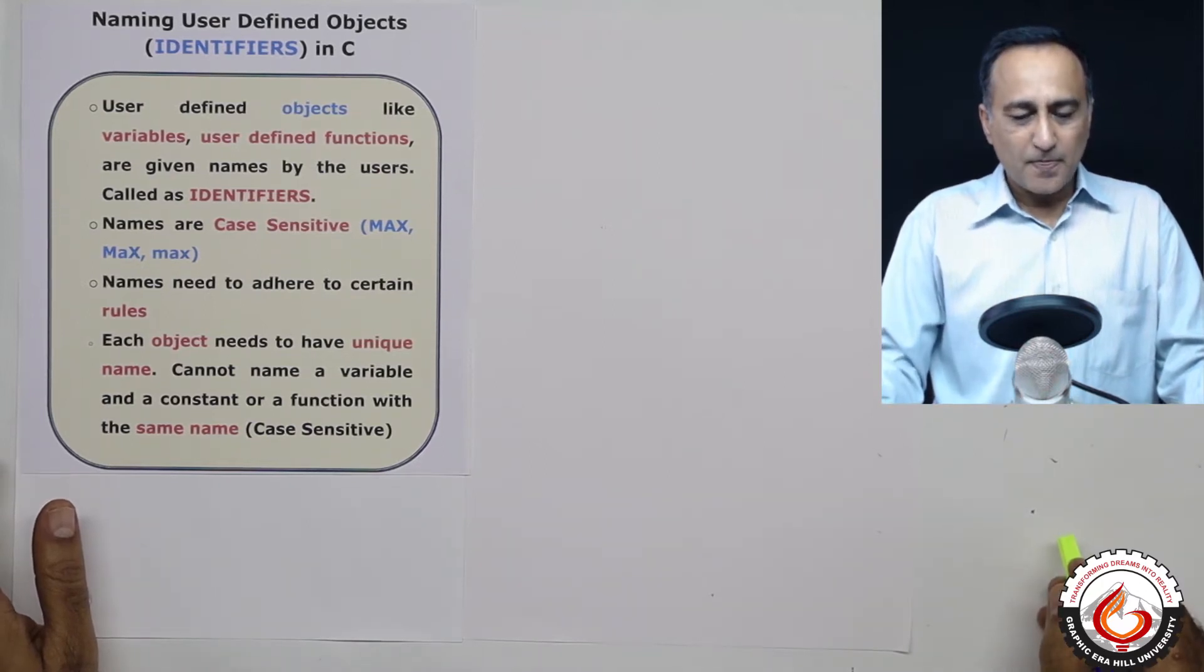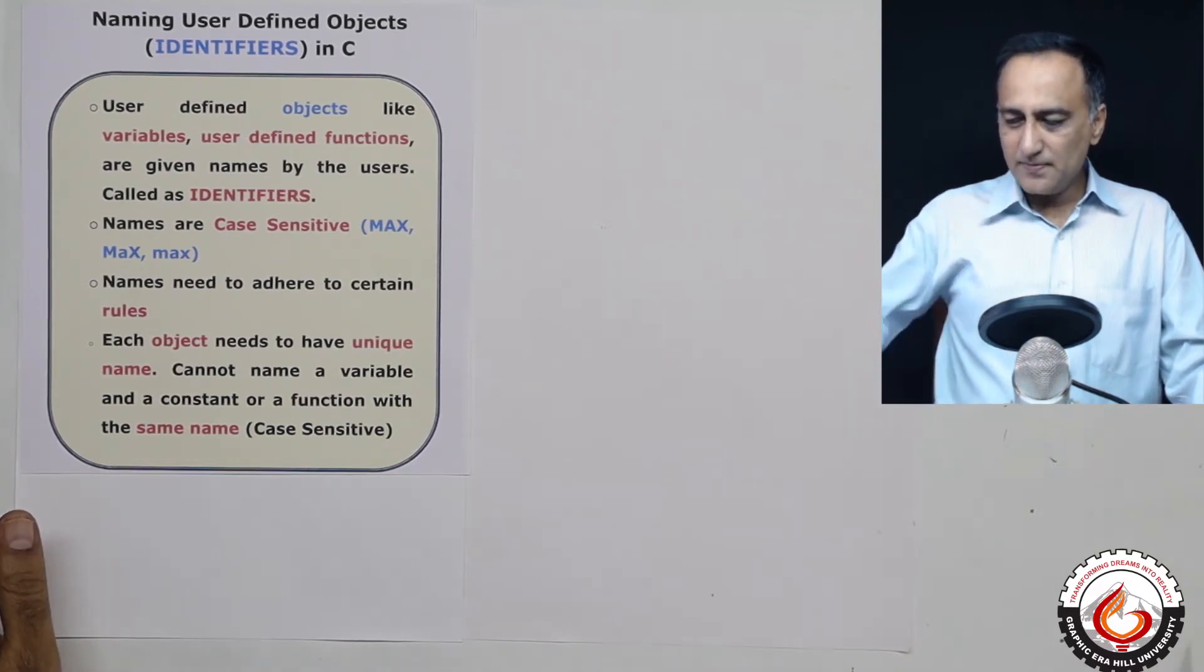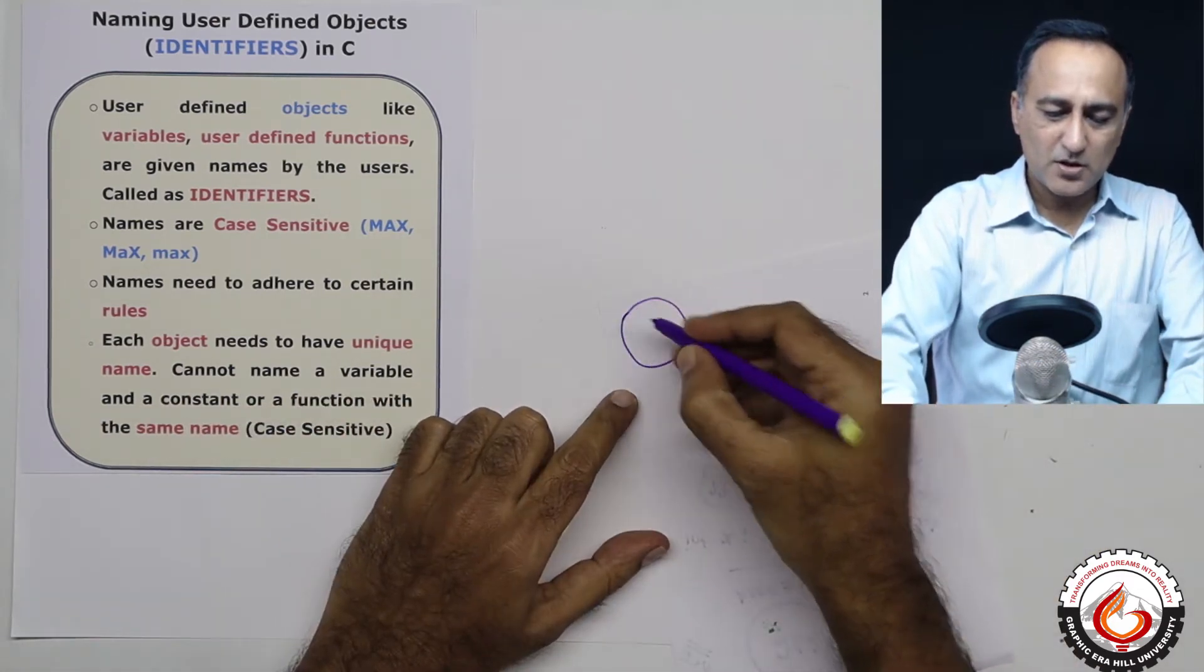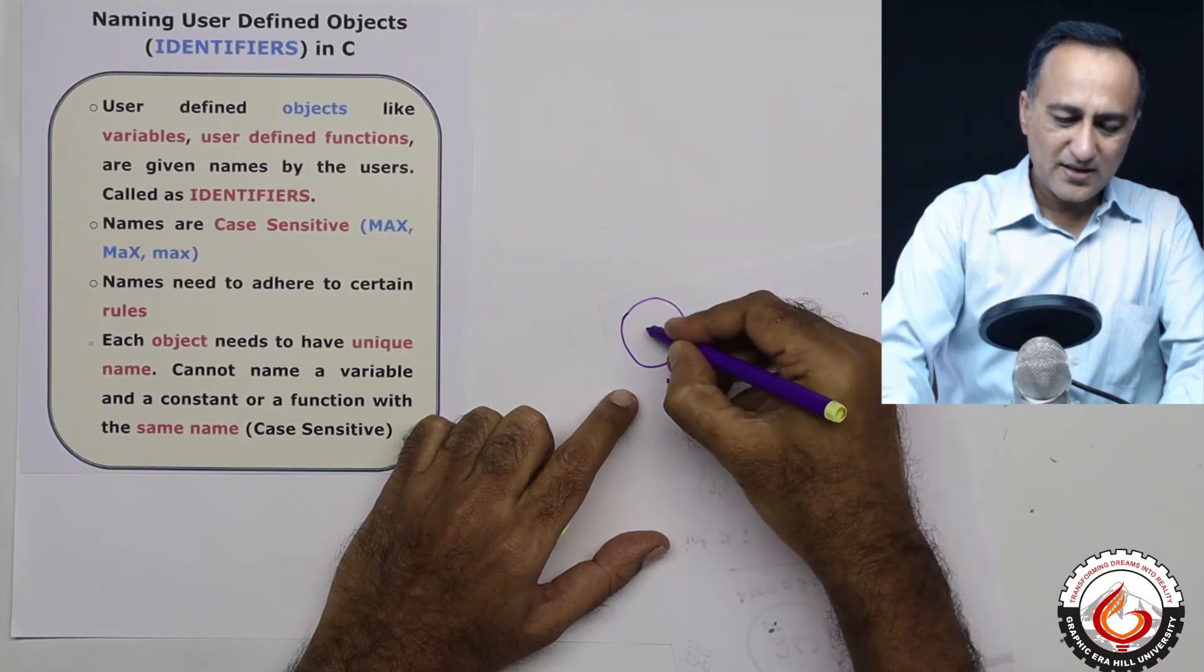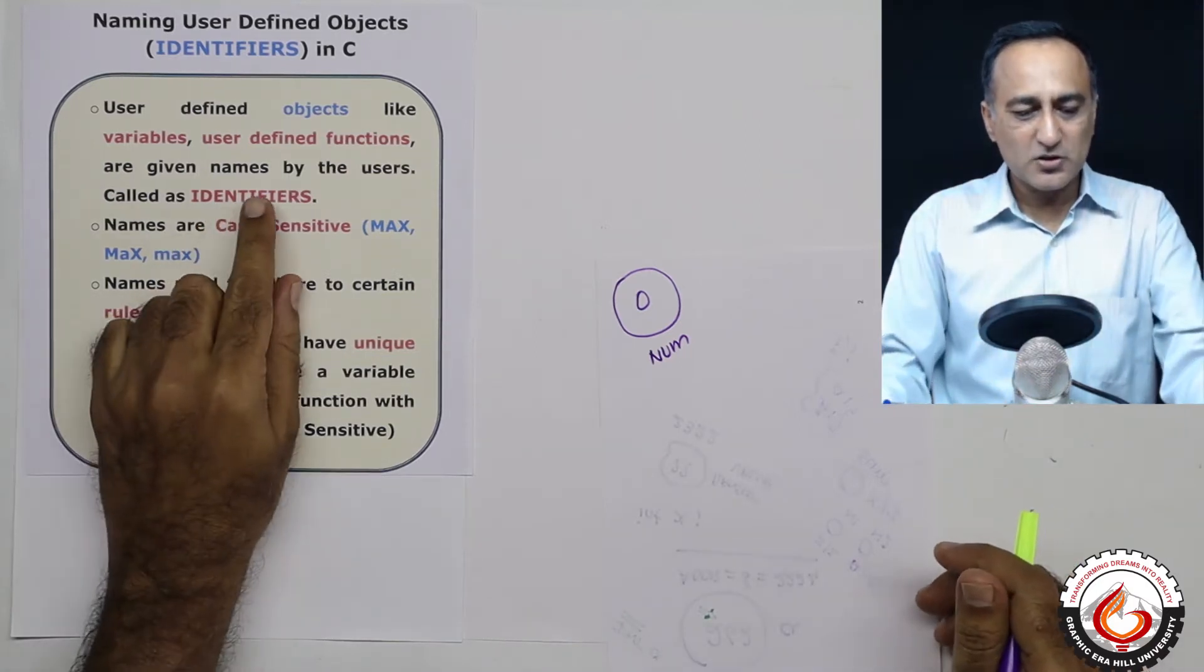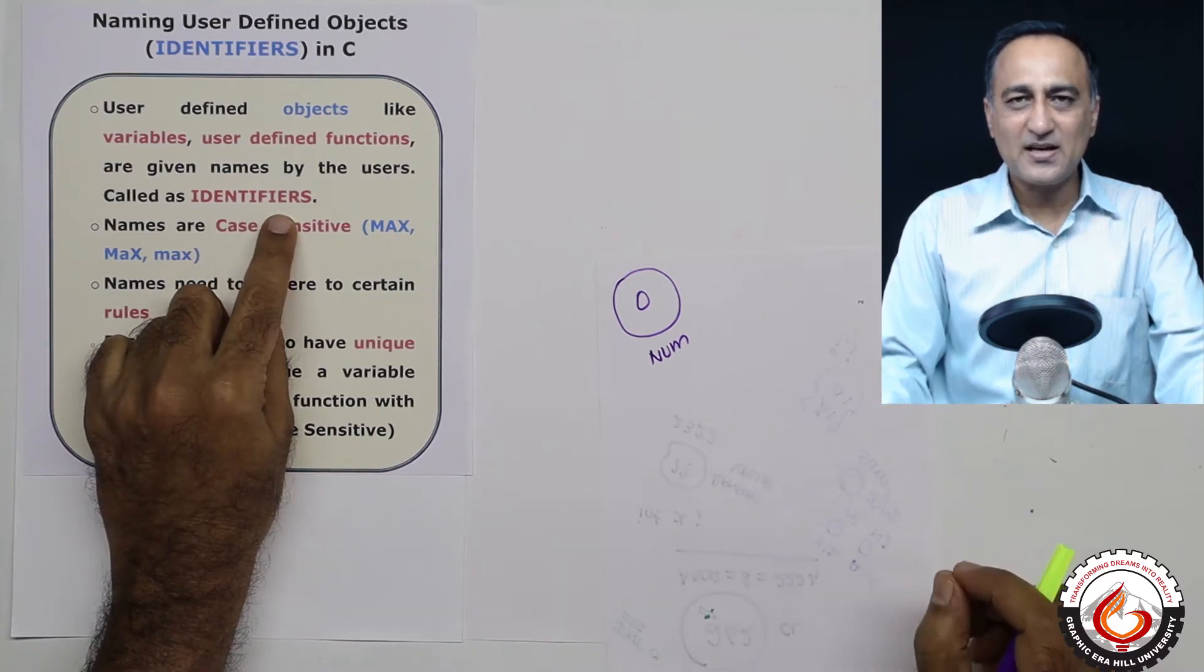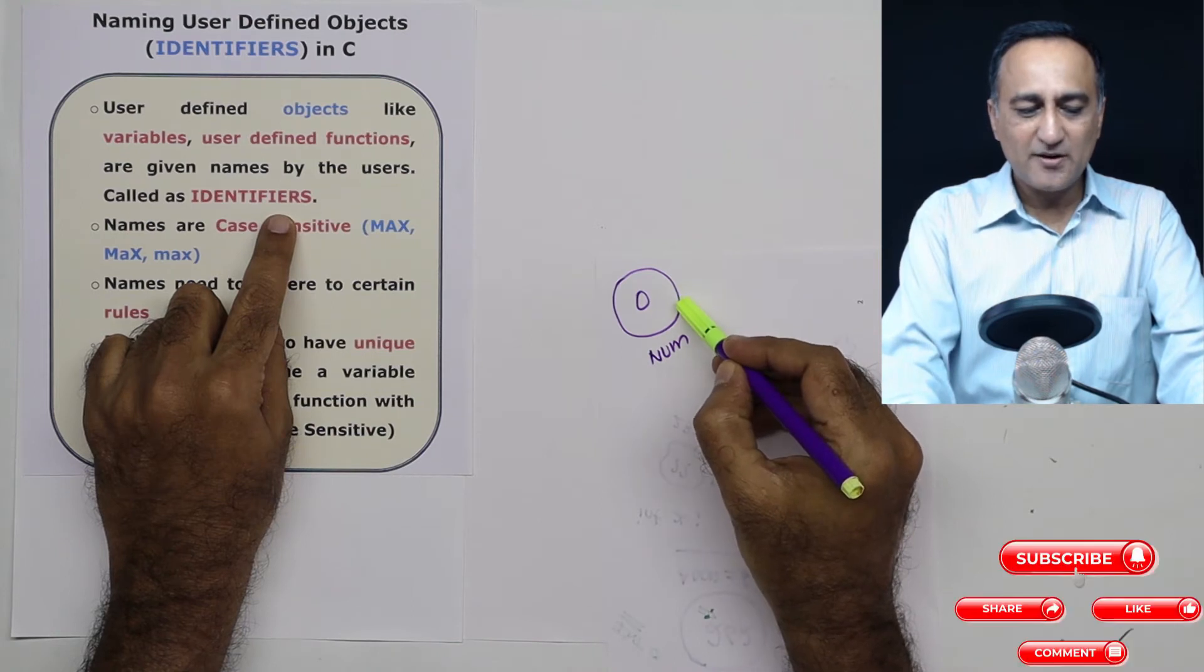Suppose I have a variable. Let's assume this is the memory location. I give it the name number, let's say this value is zero. The names given to a variable or a function by the users are called as identifiers. Identifiers are user given names to objects like variables and functions.